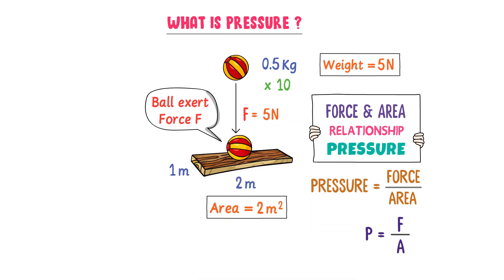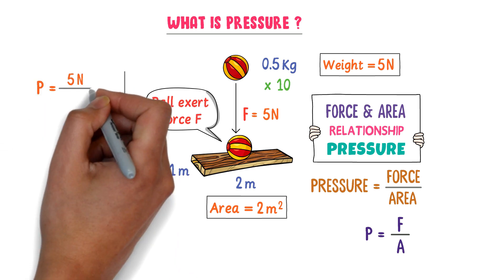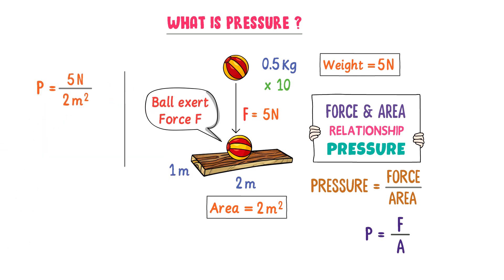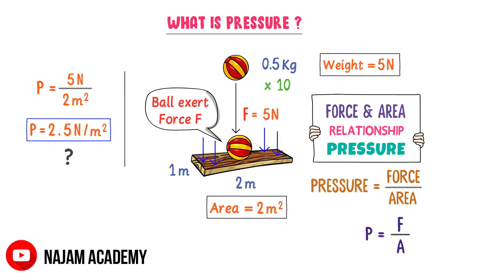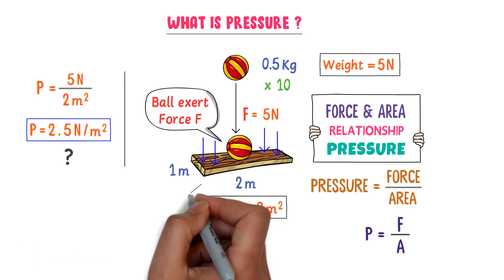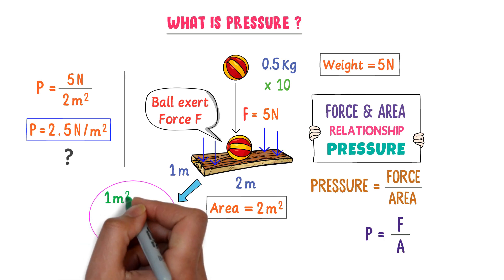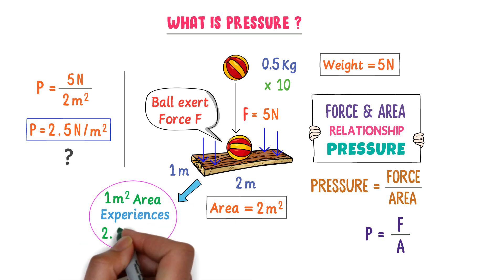For example, the ball exerts 5 Newton force on area 2 meter squared. So I get P is equal to 5 Newton divided by 2 meter squared, which gives P equal to 2.5 Newton per meter squared. So the pressure on this wooden sheet is 2.5 Newton per meter squared. This means that every 1 meter squared area of this wooden sheet experiences 2.5 Newton force.